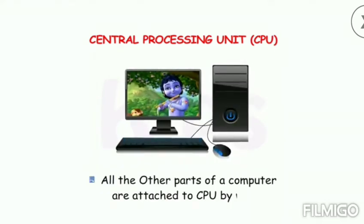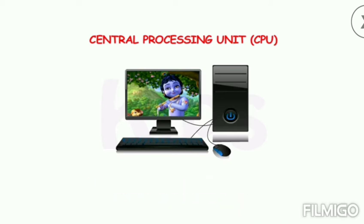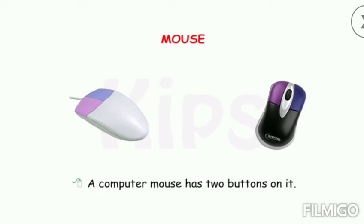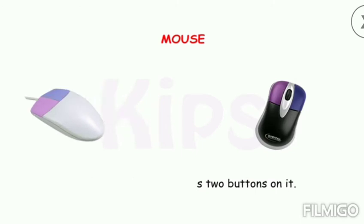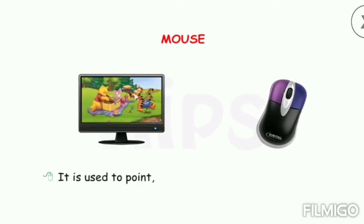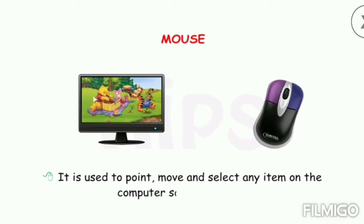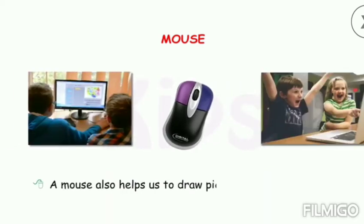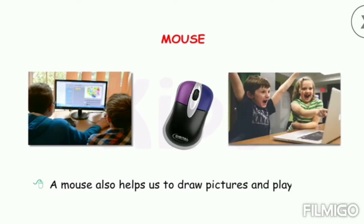All the other parts of a computer are attached to the CPU by wires. A computer mouse has two buttons on it. It is used to point, move, and select any item on the computer screen or monitor. A mouse also helps us to draw pictures and play games.